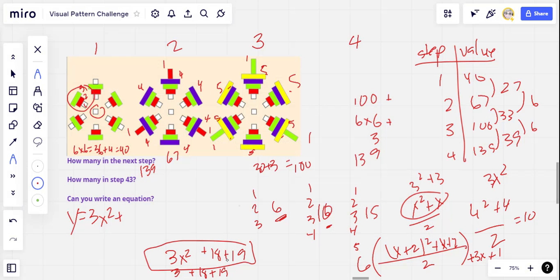So pretty insane how you have to get there. But that's the equation. So 3x squared plus 18x plus 19.